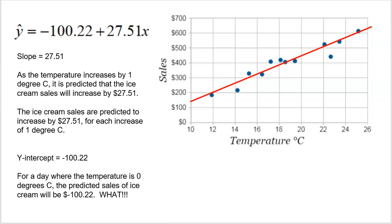Let's do one more example with ice cream and temperature. As the temperature goes up in a town, the ice cream sales also go up — very linear, very strong, very positive. The least squares regression line is negative 100.22 plus 27.51x. For the slope: when the temperature — x — goes up by one degree Celsius, I predict the sales of ice cream to go up by $27.51. As the temperature goes up by one degree Celsius, it is predicted that the ice cream sales will increase by $27.51.